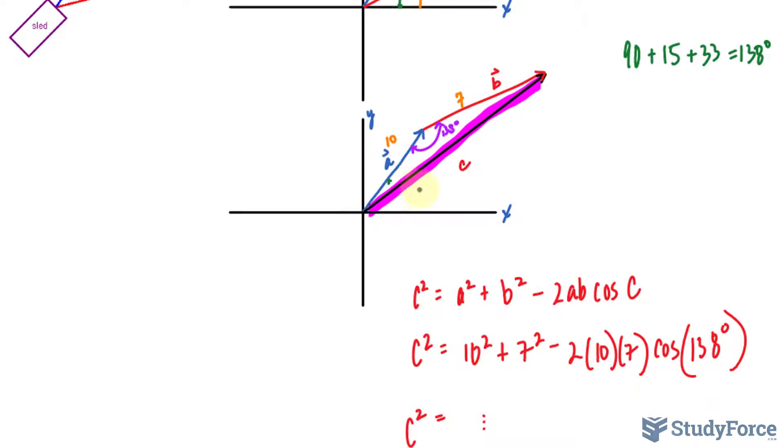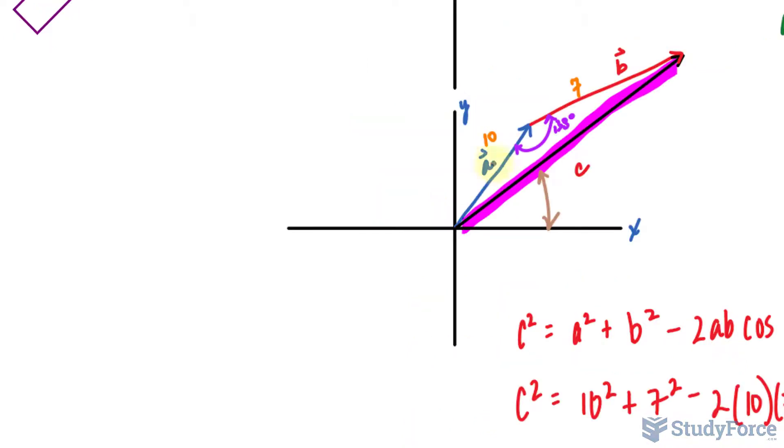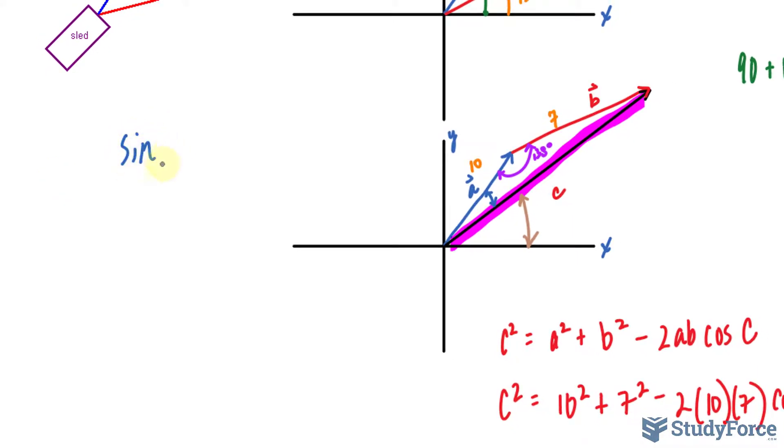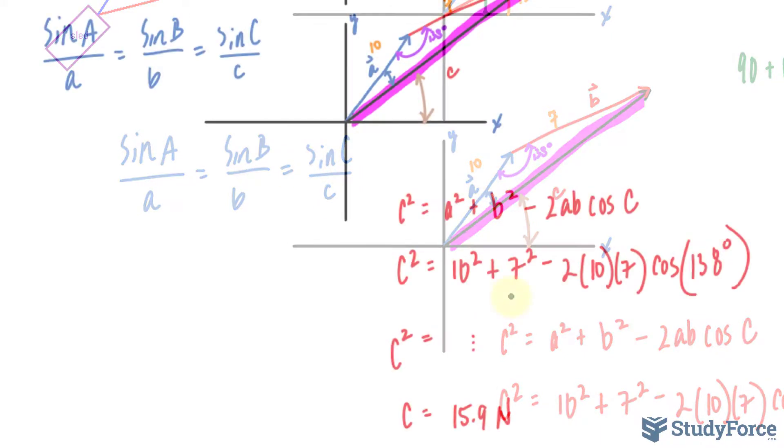We still need to find out the angle it makes with the x-axis, so that angle right there. To do that, we already know the fact that from here to here is 33 degrees. We already know that. It was given to us in the question. What we can do next is use the sine law to find out that smaller angle, add it to 33, and subtract the sum from 90 degrees. The sine law looks like this. We have sine angle A over the length of A, sine angle B over the length of B, and sine angle C over little c.